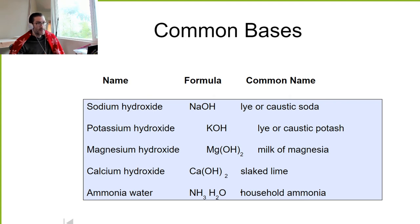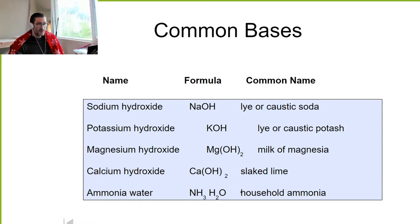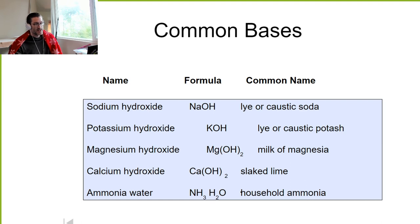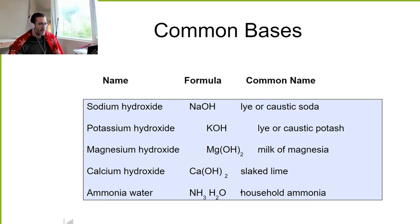Common bases: sodium hydroxide, NaOH — our old friend we just used to make soap. Its common name is lye or caustic soda — caustic because it's basic, soda because it's a sodium compound. Next is potassium hydroxide, KOH, whose common name is also lye — or caustic potash, because it's basic and a potassium compound. Thanks, English, for your remarkable specificity in naming things.